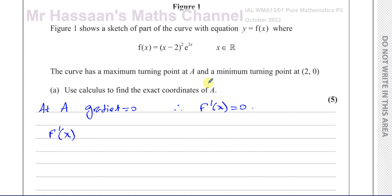We have to differentiate this expression. This is a product of two separate functions — not a function inside a function, but a function multiplied by another function. When differentiating something like this, we cannot just differentiate one of the factors and multiply by the differential of the other — that's a common mistake. We have to use the product rule, which gives us a formula to differentiate a product of two separate functions. We also have the quotient rule for fractions, but here we use the product rule.